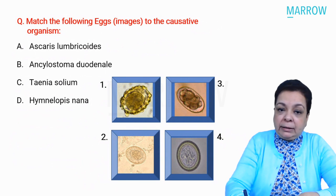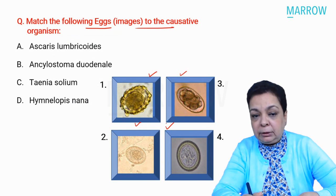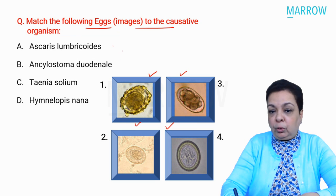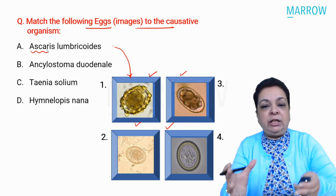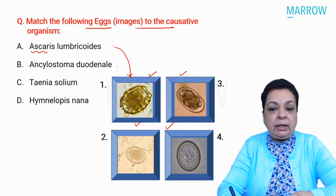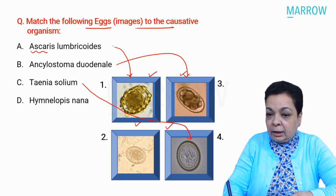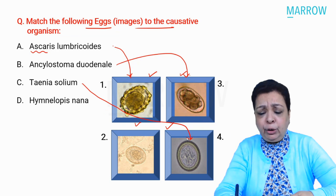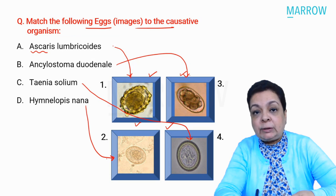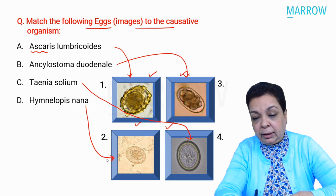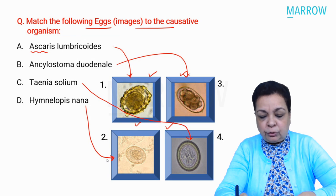Next question: match the following eggs to the causative organism — four pictures of eggs seen in stool. This was very easy. Ascaris lumbricoides has a characteristic egg with mammulations on its surface. Ankylostoma duodenale is a hookworm. Taenia solium shows a hexacanth oncosphere surrounded by a radially striated embryophore. Hymenolepis nana is the typical egg showing polar filaments.